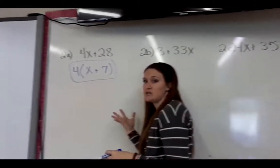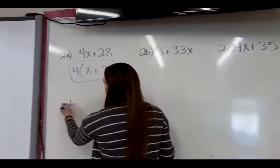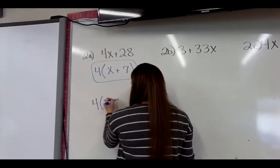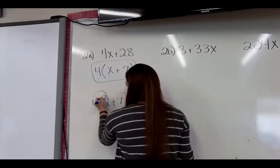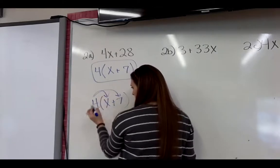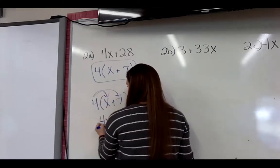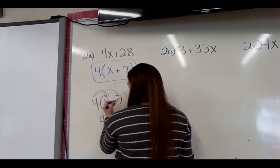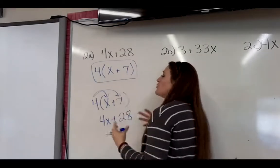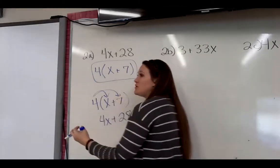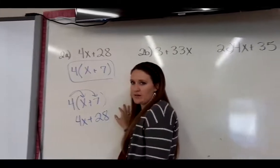Now the reason that that works, okay, you don't have to do this next part, I'm just showing you. If I multiply that 4 in, I distribute it in. 4 times x is 4x, plus 4 times 7 is 28, which is what we started with. So all we're doing is we are undoing the distributive property when we factor.